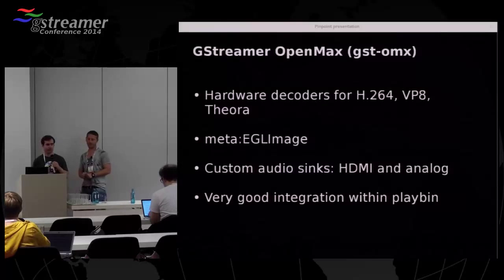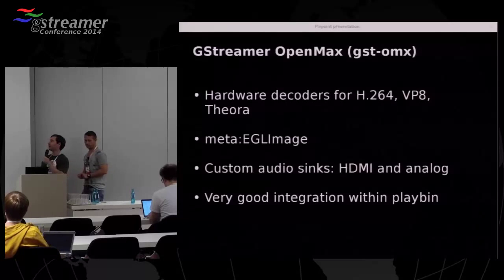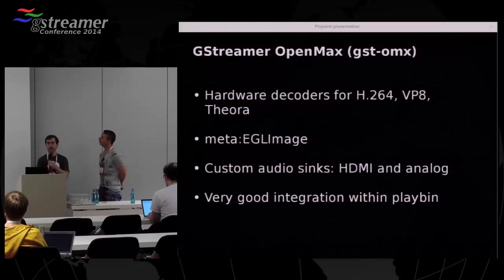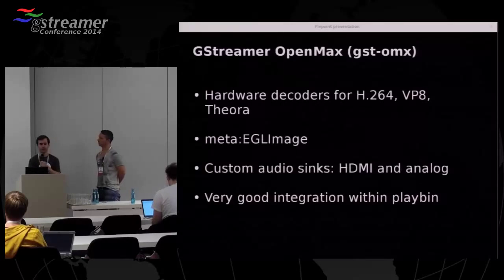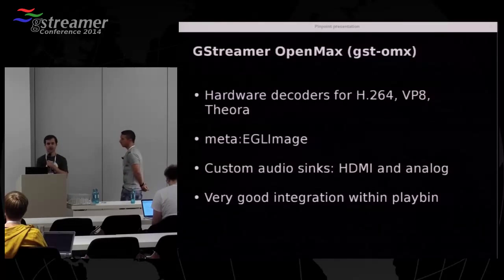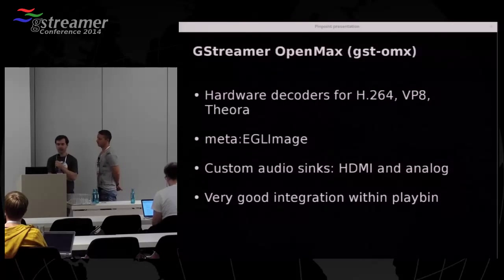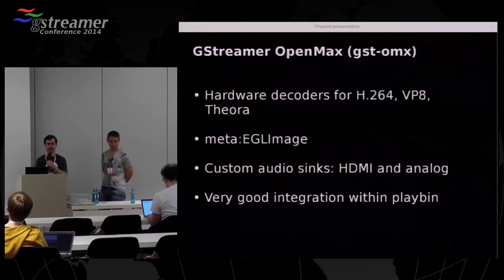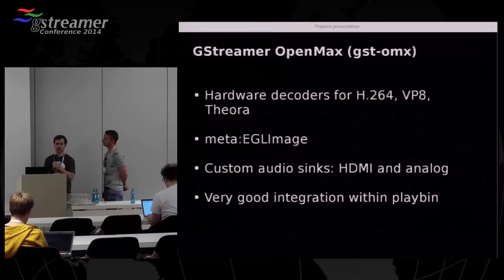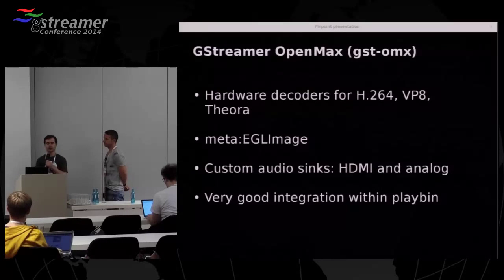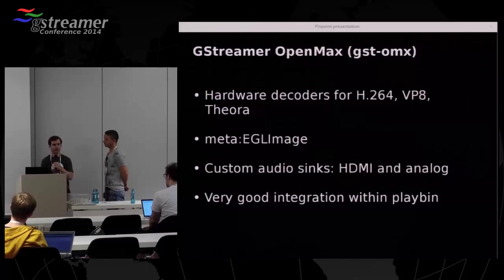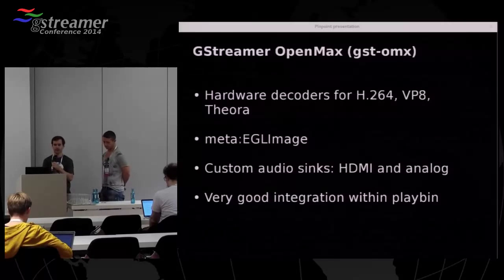A few words about the OpenMax digital elements we are using on the Raspberry Pi. There is hardware decoding support for some video formats: H.264, VP8, and Theora. The decoders are able to output buffers in EGL images so they can later be rendered by the video sink. There are also custom audio sinks specific to the Raspberry Pi using the MMAL abstractions, which are quite nice because sometimes you don't need PulseAudio for embedded usage — you can route audio directly to HDMI or analog output. All these elements are well integrated in PlayBin, which is what we use in WebKit.